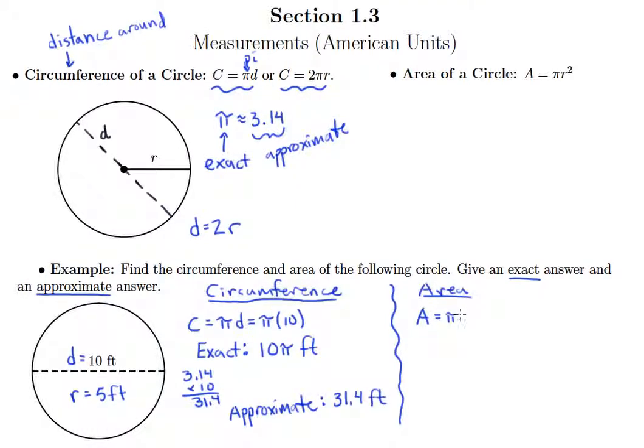Area equals pi r squared, but that's pi times 5 squared. And we can go ahead and square our 5 here, that's pi times 25.